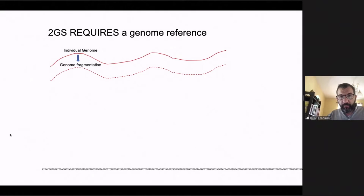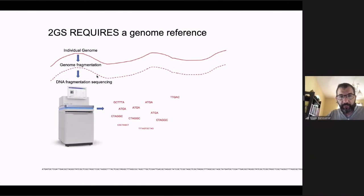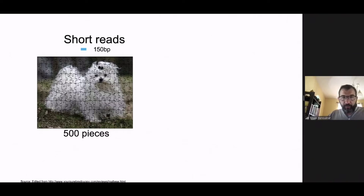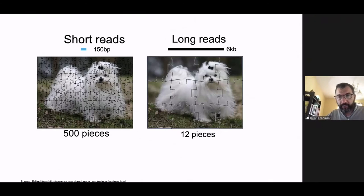The way second generation sequencing works: you take your individual genome, fragment it, give these fragments to the sequencer, which identifies each nucleotide. Then you align the reads to the reference genome. When you find a read with a mismatch — for example, the reference has a C but the individual has a G — that is considered a mutation. With short reads, you must reconstruct a very complicated puzzle. With third generation long reads, the puzzle has fewer pieces, making it much easier to identify differences between the reference and the genome of interest.